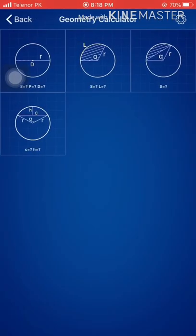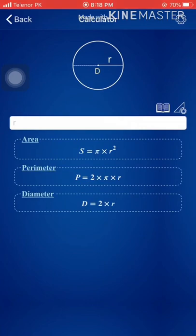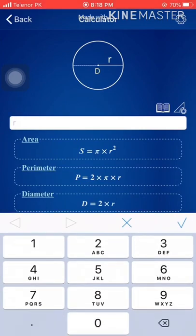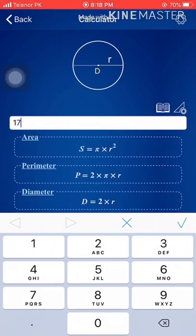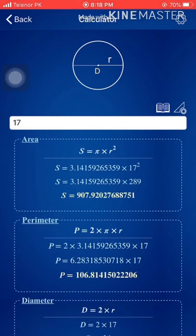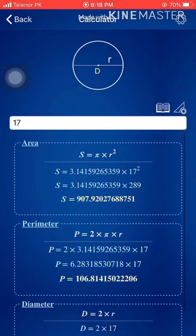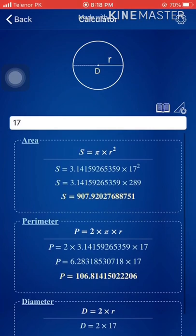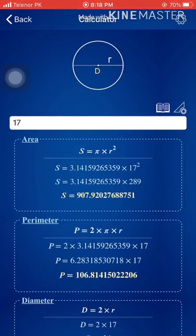Let me try another one — the circle. I'm going to enter the value: the radius equals 17 units. The area, perimeter, and diameter of the circle have been calculated by this app. That's pretty amazing, and done in a quick way.